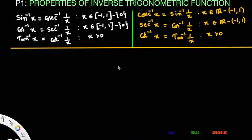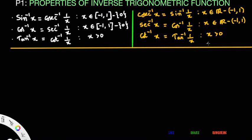Properties of inverse trigonometric functions — first property. We are going to prove: sin⁻¹x = csc⁻¹(1/x), cos⁻¹x = sec⁻¹(1/x), tan⁻¹x = cot⁻¹(1/x). Similarly, csc⁻¹x = sin⁻¹(1/x), sec⁻¹x = cos⁻¹(1/x), and cot⁻¹x = tan⁻¹(1/x).